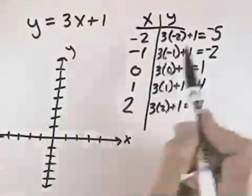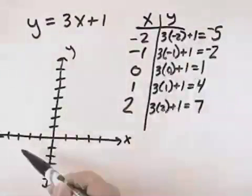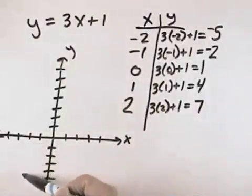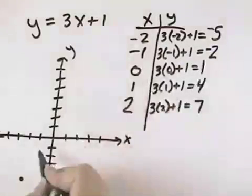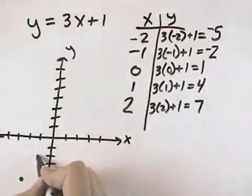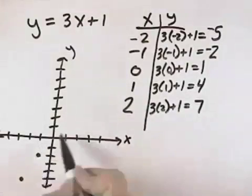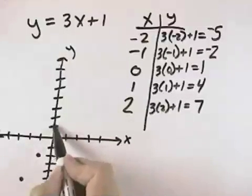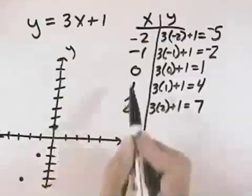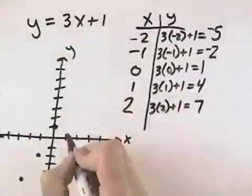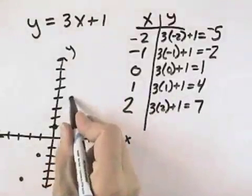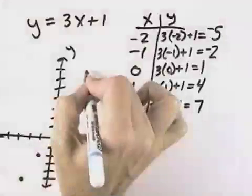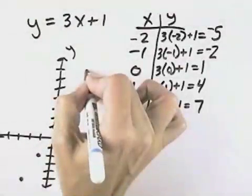So when x equals negative 2, counting 2 to the left, y equals negative 5, so we count 5 down to get the point negative 2, negative 5. When x is negative 1, y is negative 2. When x is 0, we count up 1, y is 1. When x is 1, y is 4. And finally, when x is 2, y is 7.